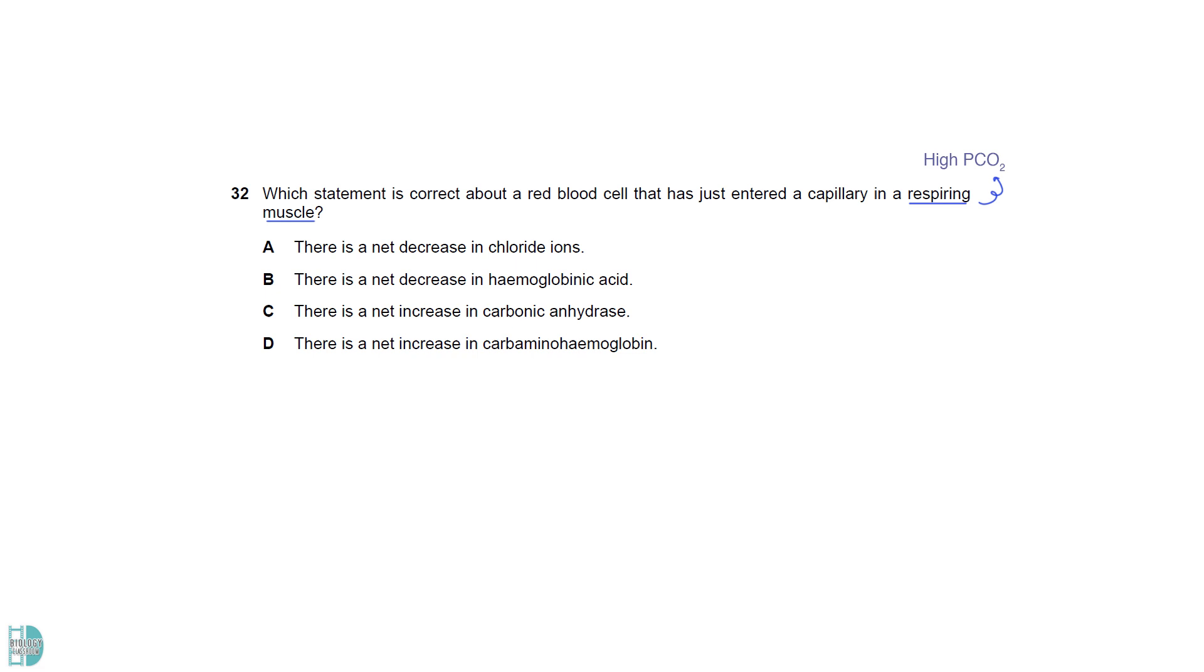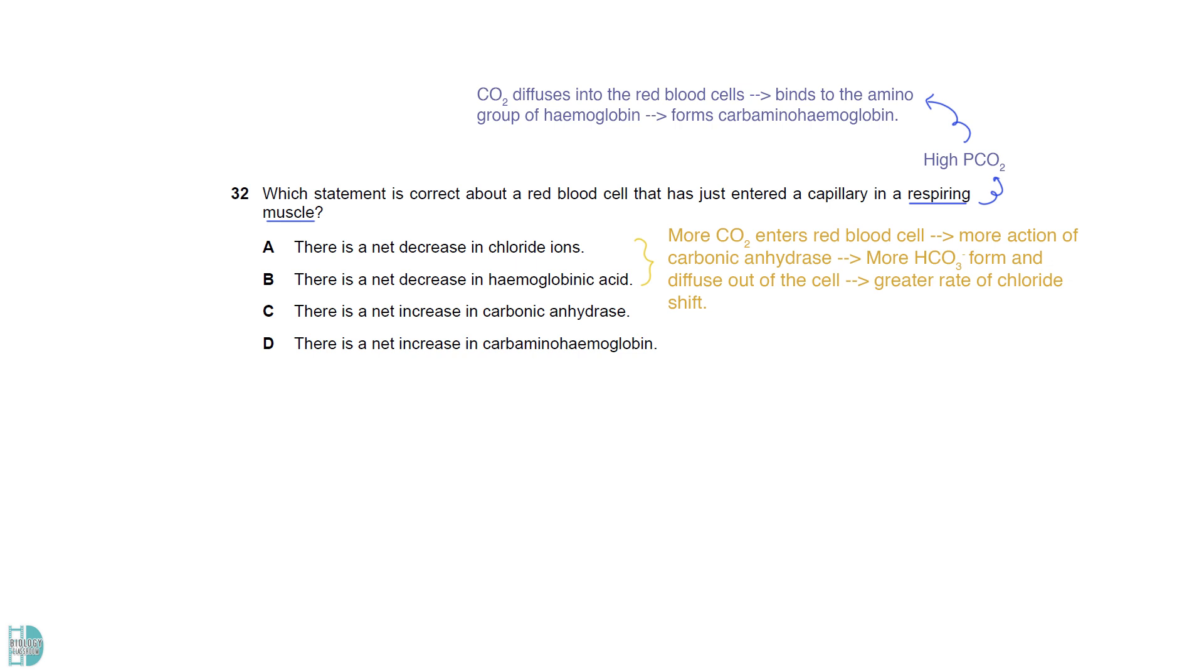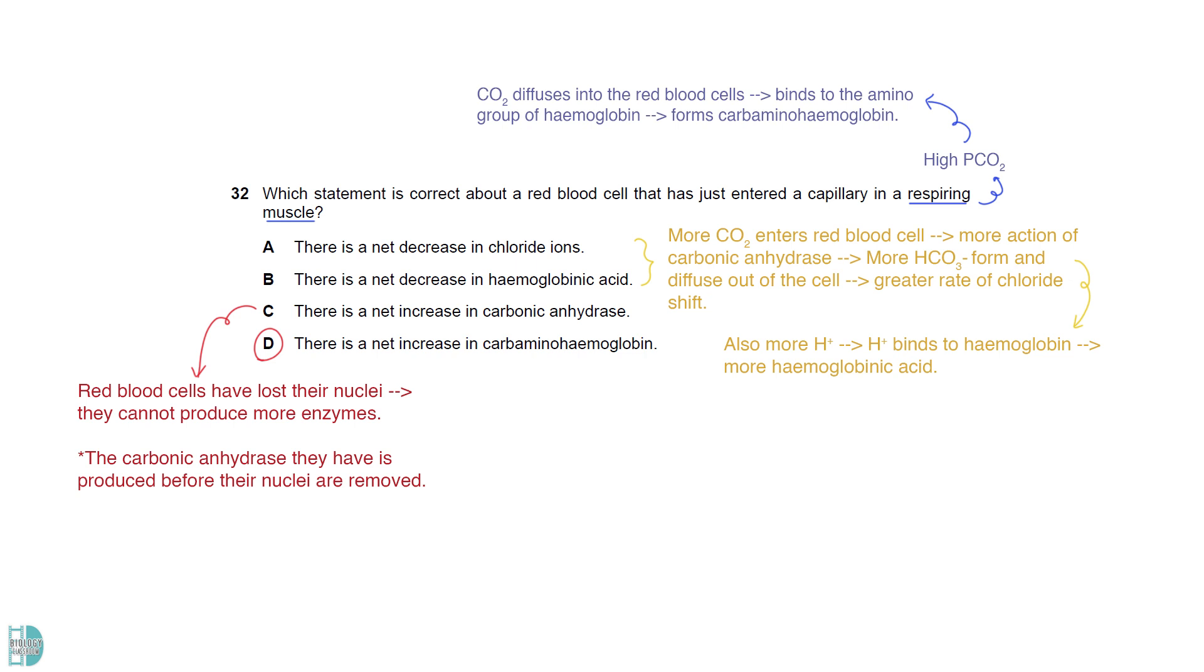There is a high partial pressure of carbon dioxide near the respiring tissue. Carbon dioxide diffuses into the red blood cells. Some of them will bind to the amino group of hemoglobin forming carbaminohemoglobin. A and B are wrong because as more carbon dioxide enters the red blood cell, there will be more action of carbonic anhydrase. More bicarbonate ions will form and diffuse out of the cell, leading to a greater rate of chloride shift. More protons will bind to hemoglobin, forming hemoglobinic acid. C is incorrect because red blood cells have lost their nuclei. They cannot produce more enzymes. They only contain the carbonic anhydrase that was produced before the removal of their nuclei.